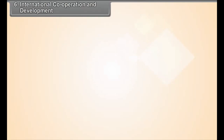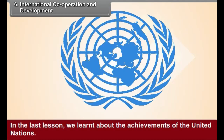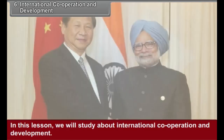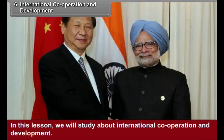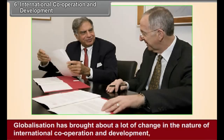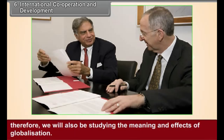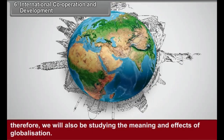Chapter 6: International Cooperation and Development. In the last lesson, we learnt about the achievements of the United Nations. In this lesson, we will study about international cooperation and development. Globalization has brought about a lot of change in the nature of international cooperation and development. Therefore, we will also be studying the meaning and effects of globalization.